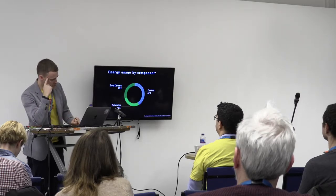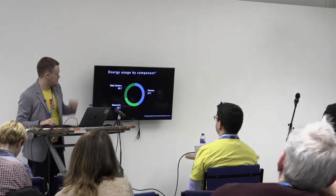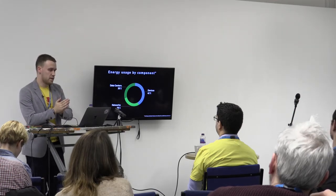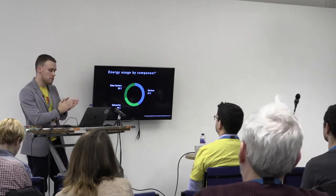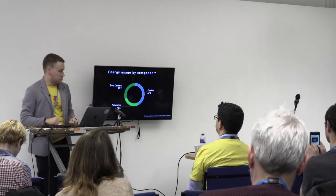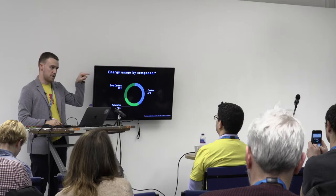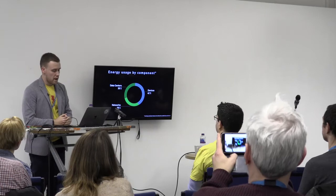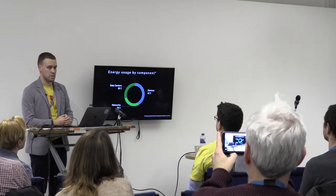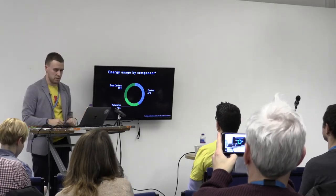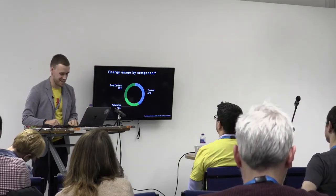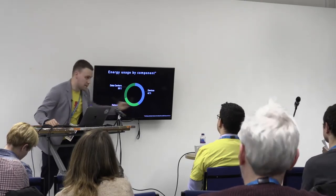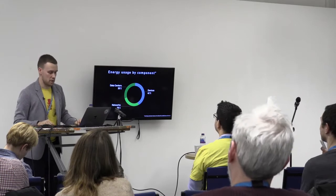We can cut the energy for data transfer into three pieces: about a third is used to run the servers our data is stored on, about a third goes to network — transferring it from the server to our homes and from our routers to our devices — and about 40% goes to the devices themselves: my computer, your smartphone, your smart toaster. All of the things I cite are linked in the slides so you can look them up afterwards.